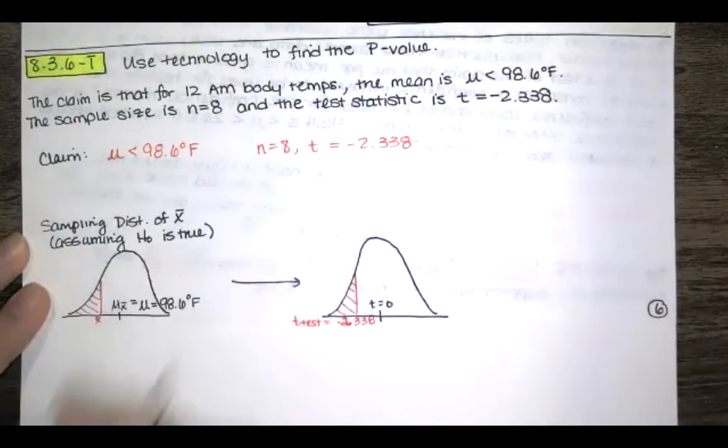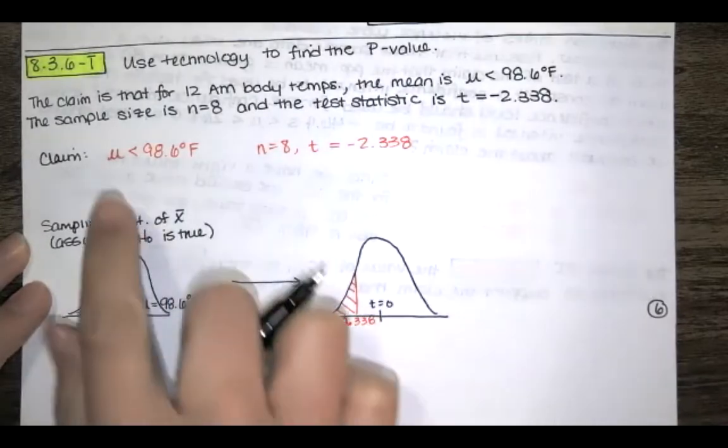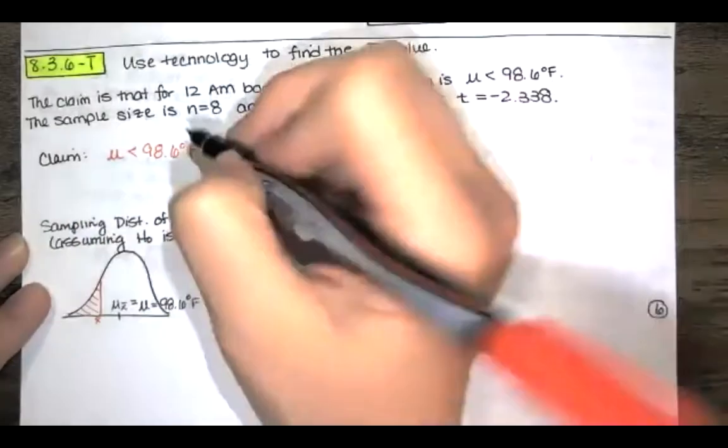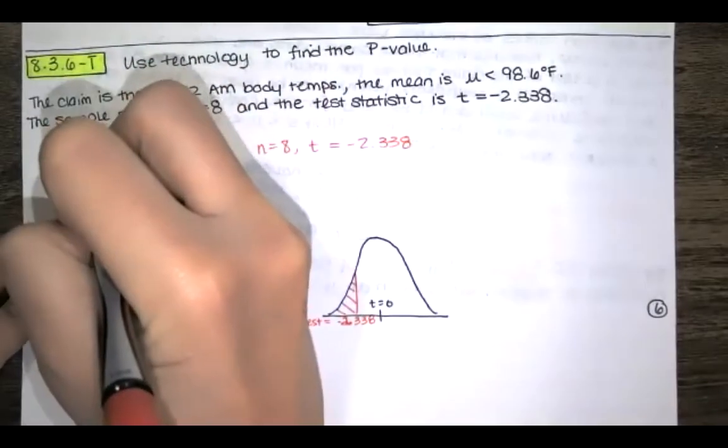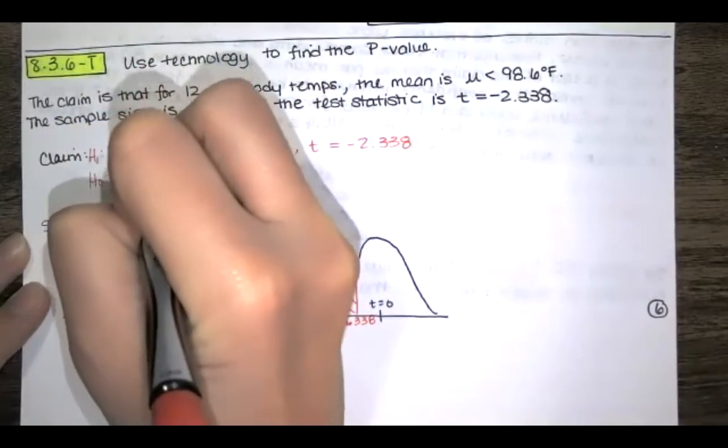The first thing I would always do is state the claim, and then notice that it does not contain the condition of equality. In this case, that is the alternative hypothesis. The null hypothesis looks just like it, but it's got an equal sign there.